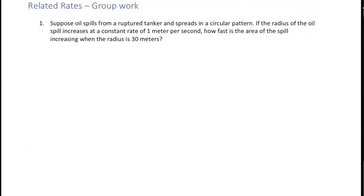This first example is really similar to one that was on the notes already. Suppose oil spills from a ruptured tanker and spreads in a circular pattern. If the radius of the oil spill increases at a constant rate of one meter per second, how fast is the area of the spill increasing when the radius is 30 meters?